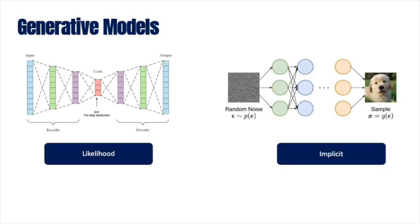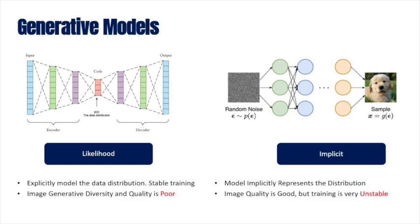Modern image generation methods are of two types: likelihood models such as variational autoencoders, and implicit models such as generative adversarial networks. But these models either lack generative prowess, stable training, or have a complicated setup.